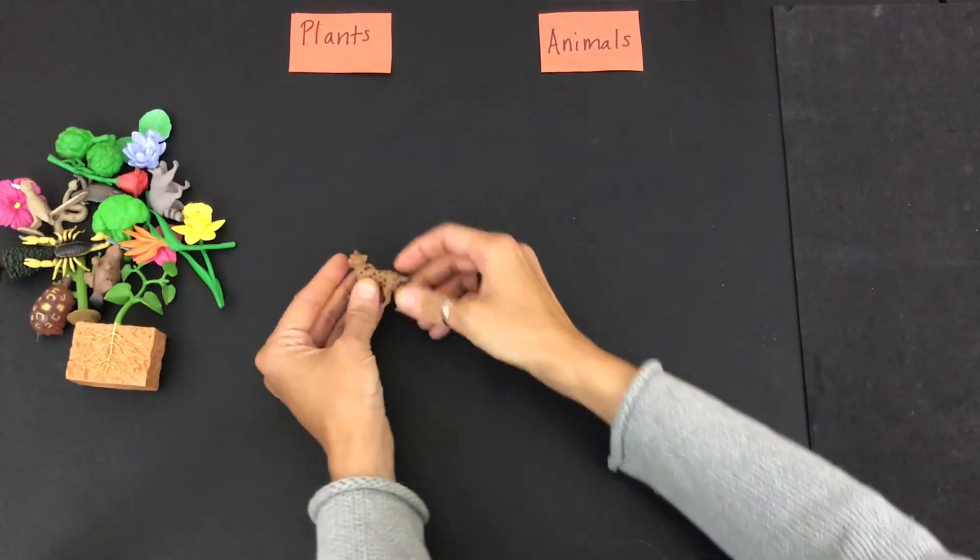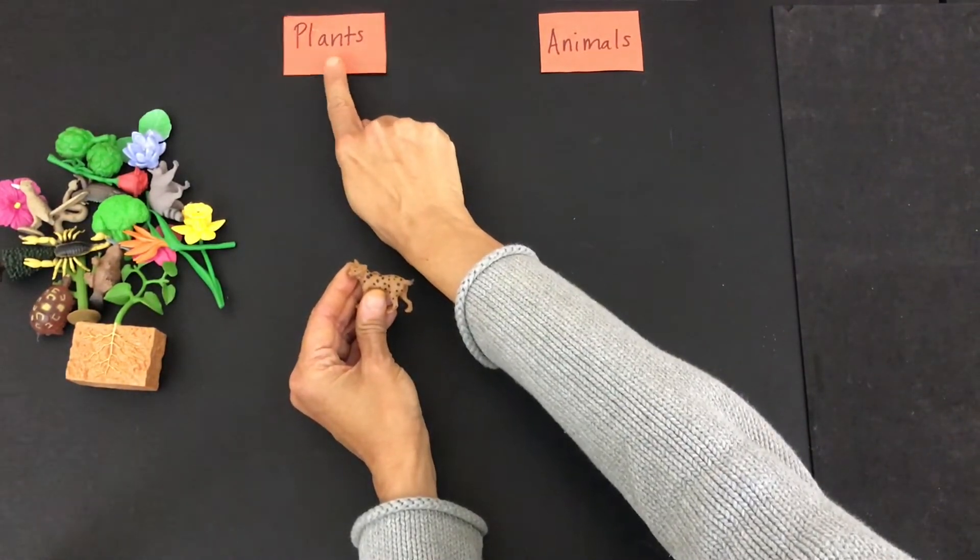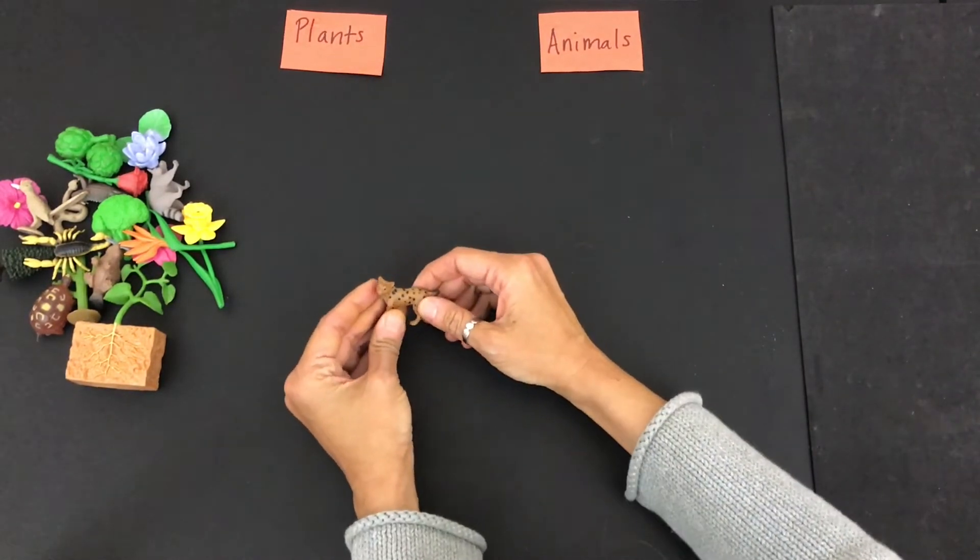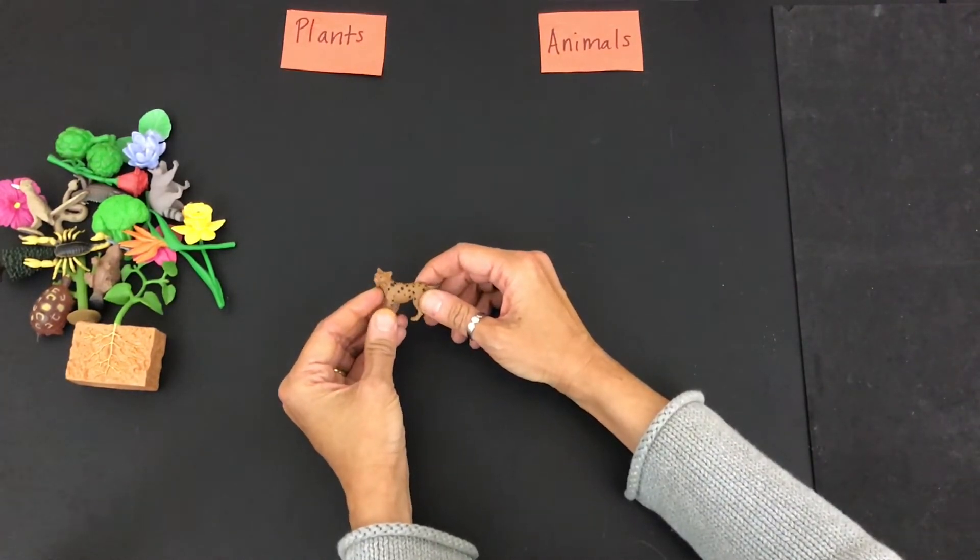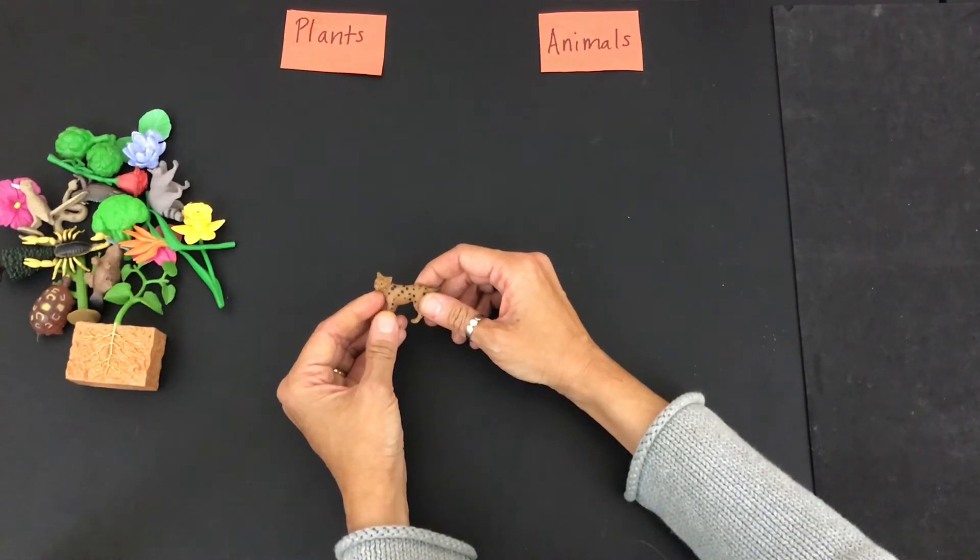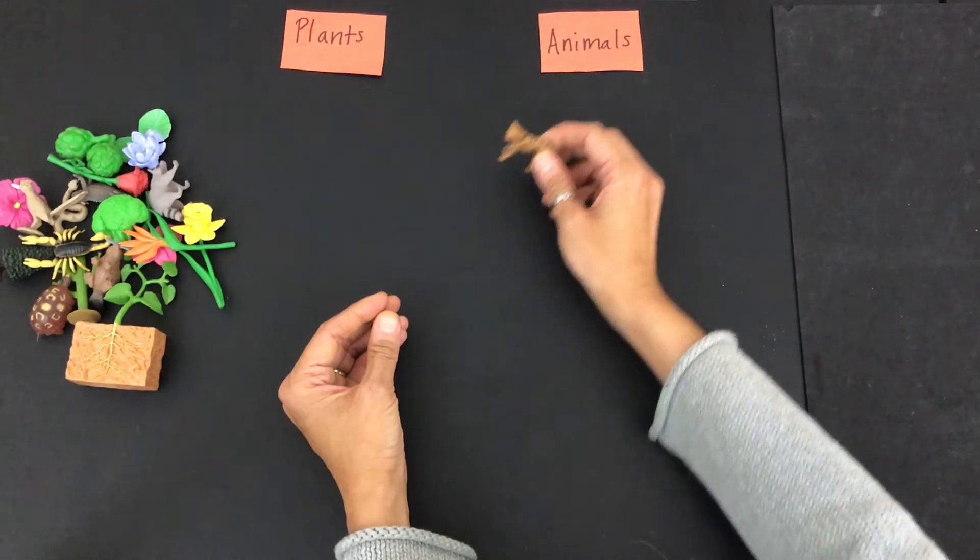So let's take a look. I have a bobcat. Is that a plant or is that an animal? That's right, a bobcat moves around and can eat and breathes. It's an animal.